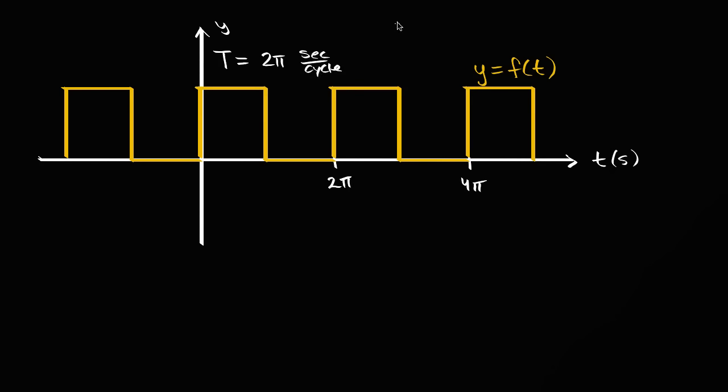And its frequency is gonna be one over that. So we could write its frequency is equal to one over two pi cycles per second. It can also be described as hertz.